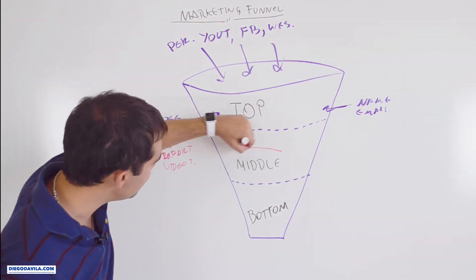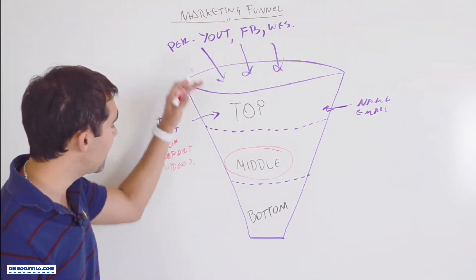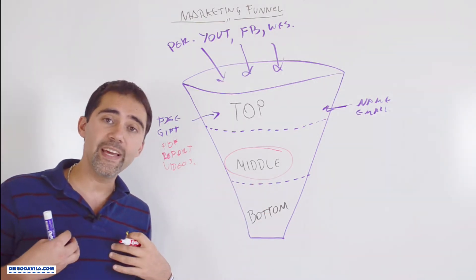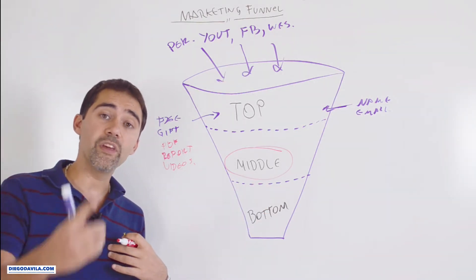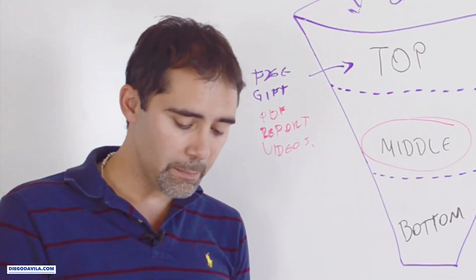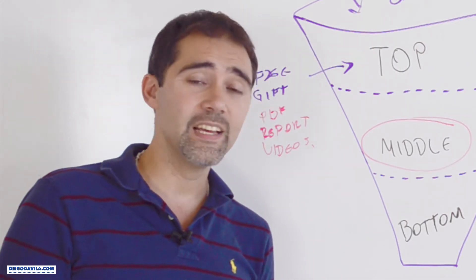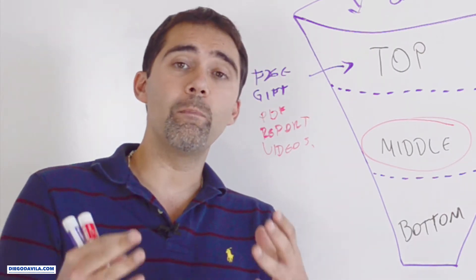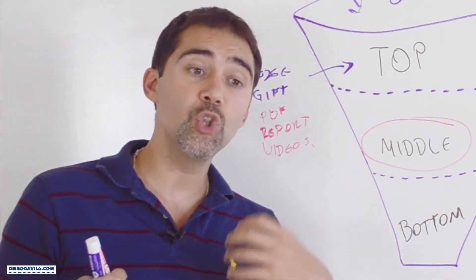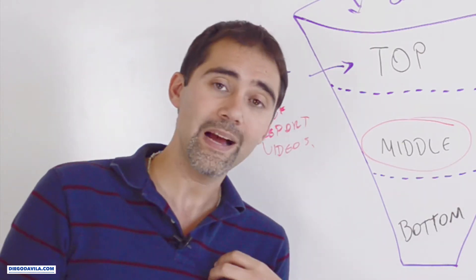The next section, the middle, is the most important thing on the marketing funnel, because in here is where you create a relationship with your viewer, with your customer. A relationship is very important because in order to buy something from somebody, from a company, you need to know the company and you need to trust the person or the company before buying.